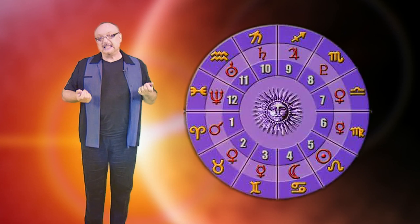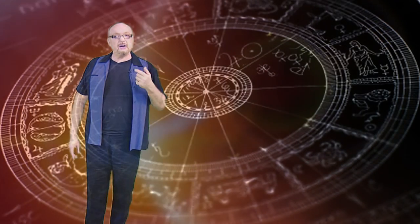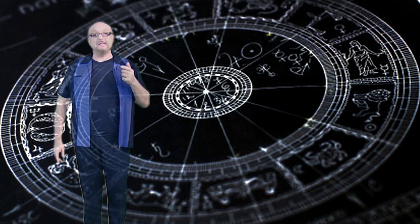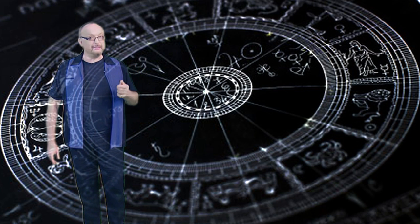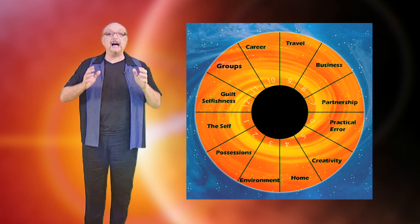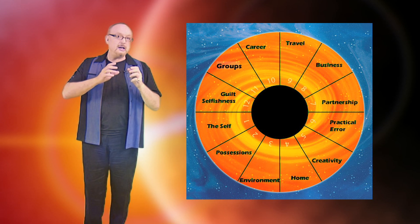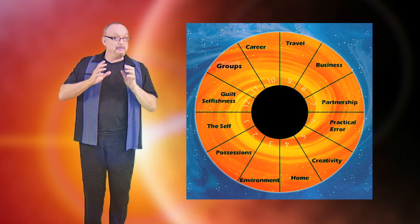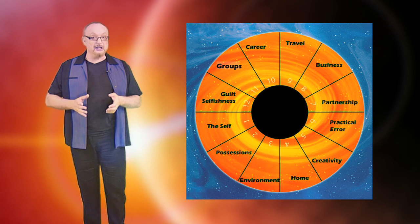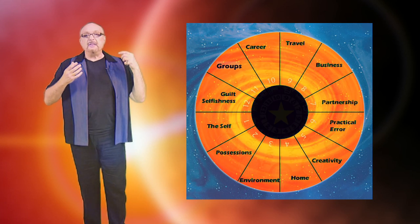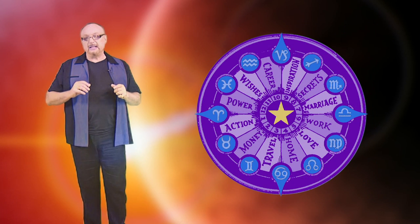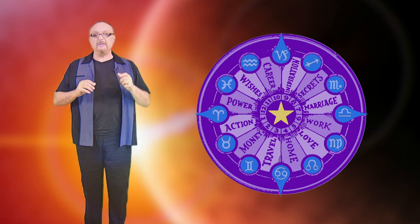Now, as you've seen, each planet represents a different energy operating in our lives, and operating in a way that is qualified by the sign, the cheese, it occupies. But the houses bring everything down to earth. They tell you where that planet, where that meatball, is operating in your life. They pinpoint the area of everyday life in which these energies are going to have their main focus.